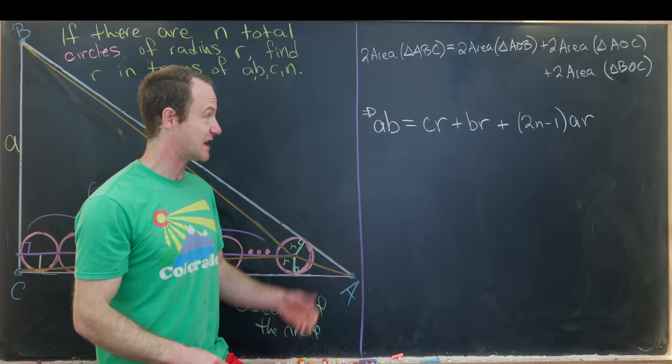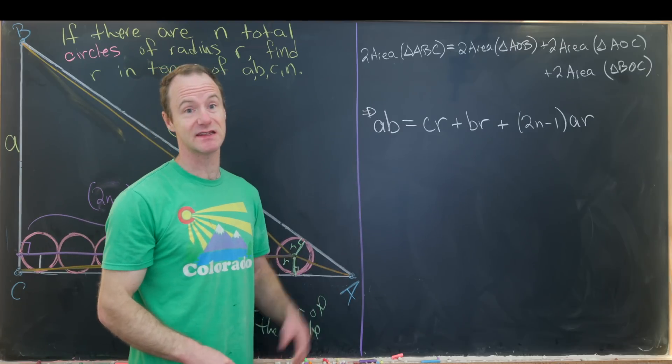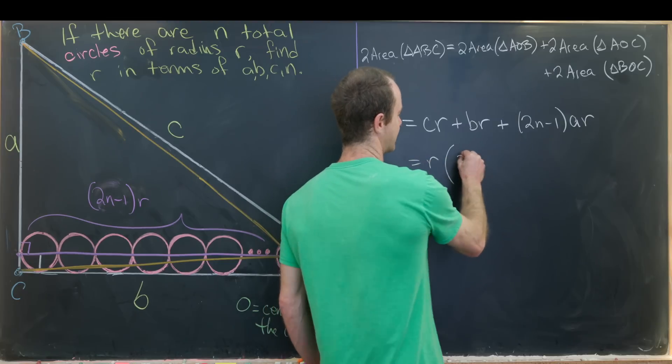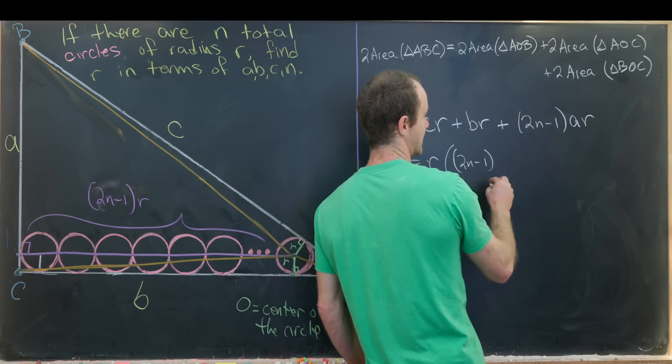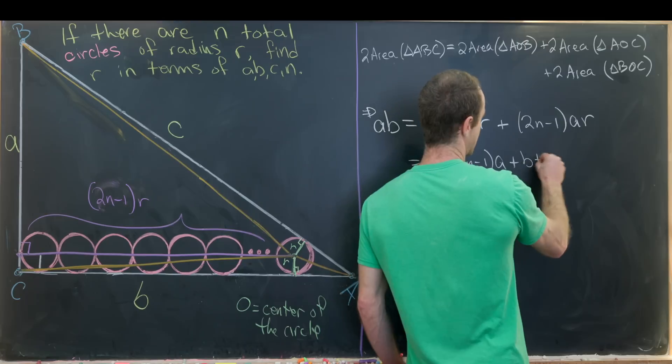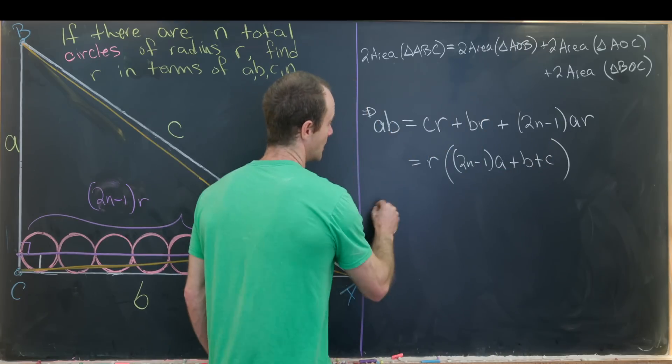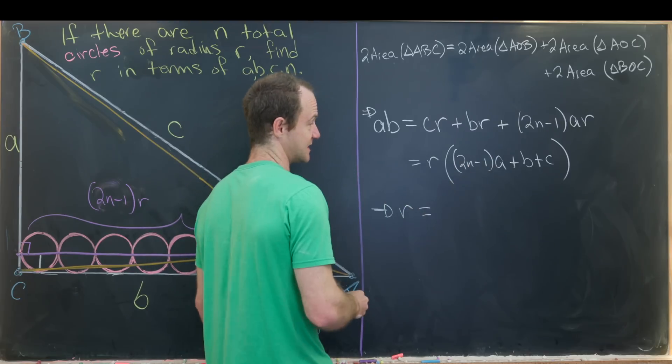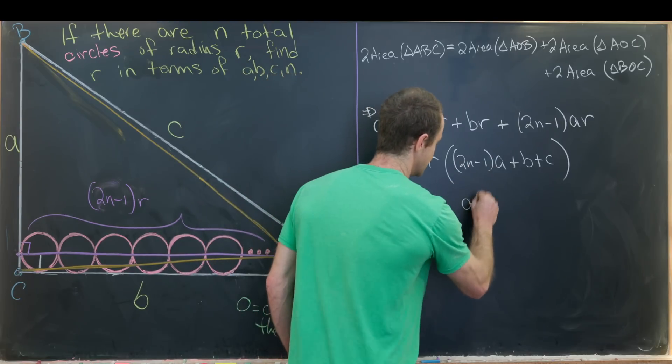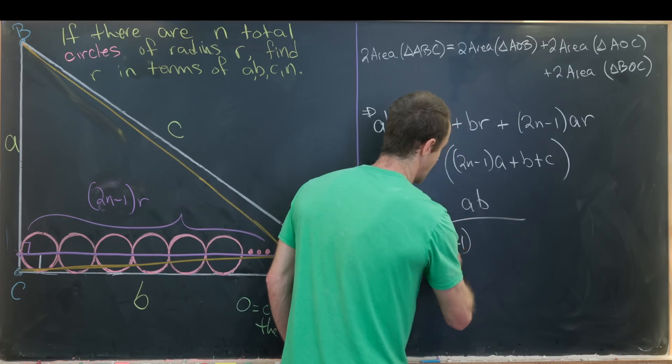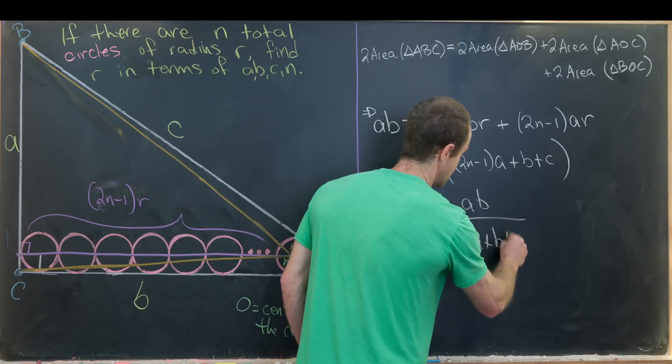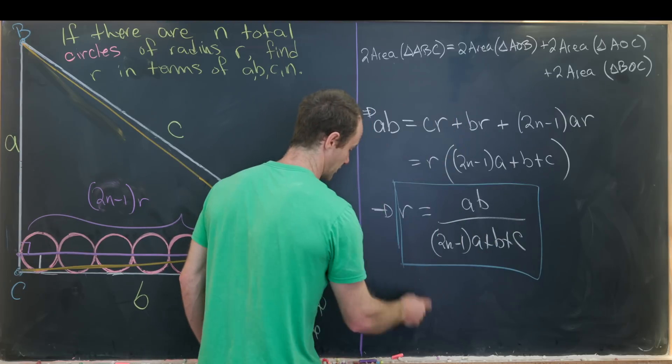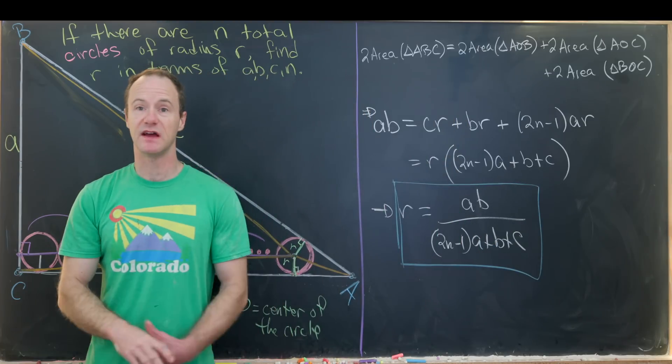That gives us something which we can pretty easily solve for the radius. We can factor an R out and that'll leave us with 2n minus one times A plus B plus C. Which means that R, dividing by this 2n minus one times A plus B plus C, is equal to A times B over 2n minus one A plus B plus C. And that's the final value for our radius. And that's a good place to stop.